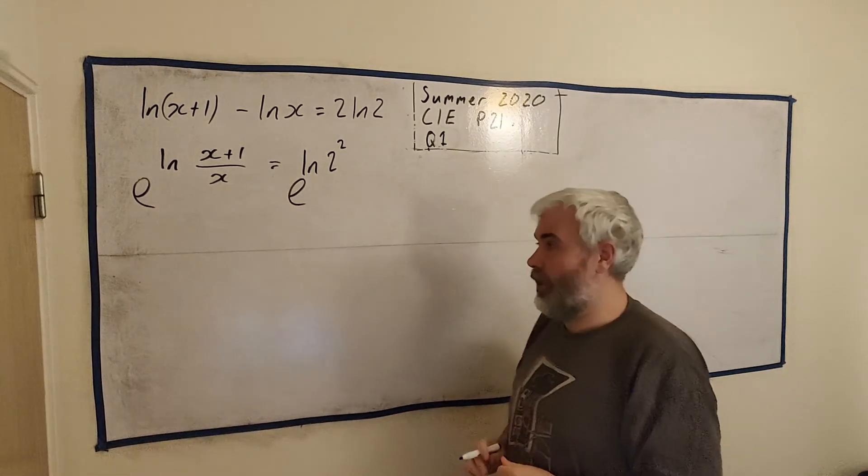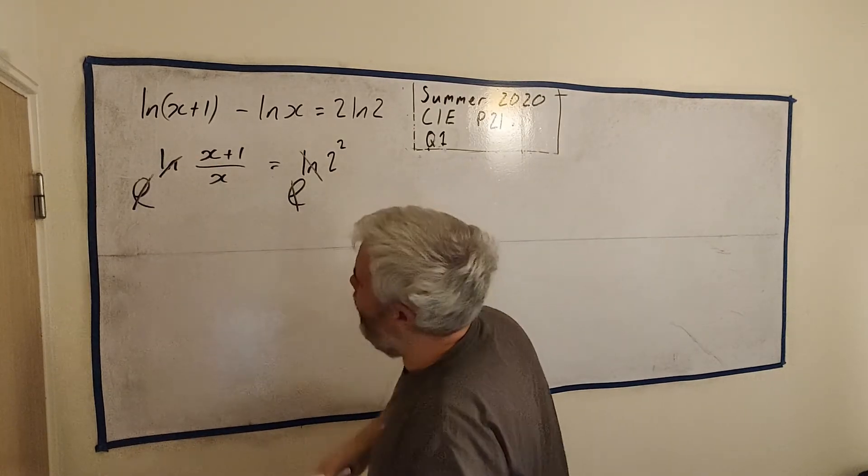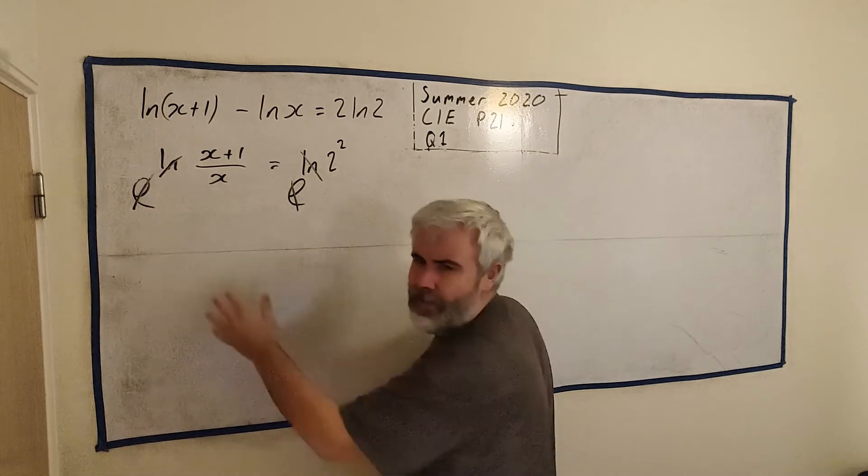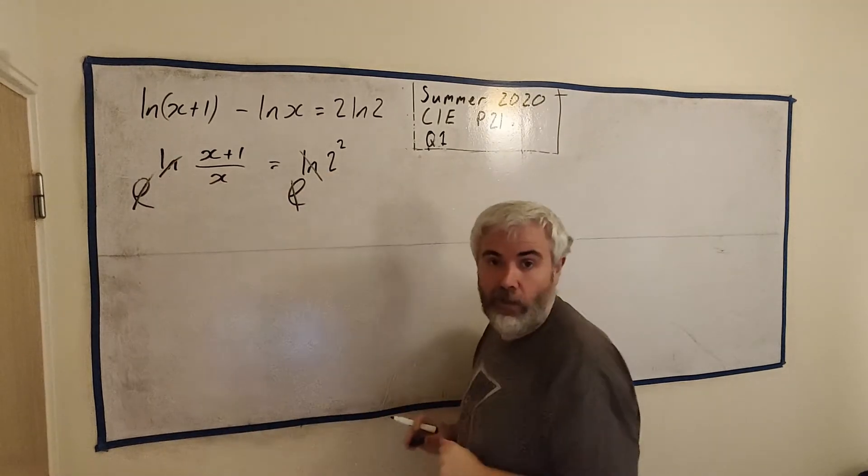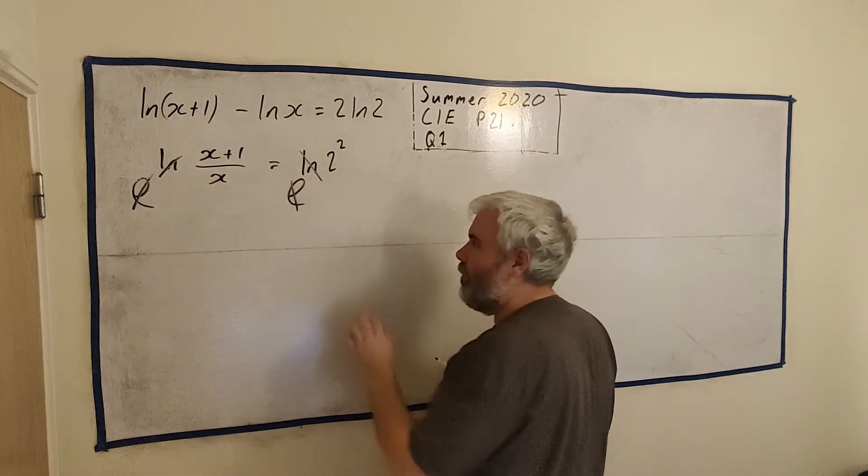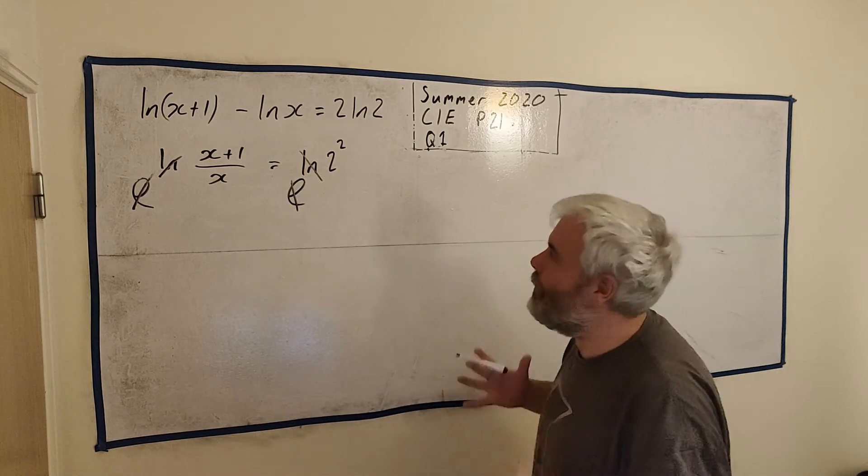And conveniently enough, e to the natural log cancels on both sides. Don't worry, the examiner will not mind if you just put a line through the two natural logs. Lots of students say they cancel each other. Not technically true, but it works fine. You'll often hear me say it even.